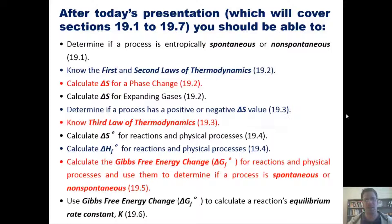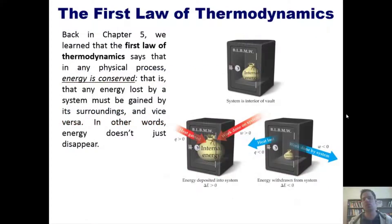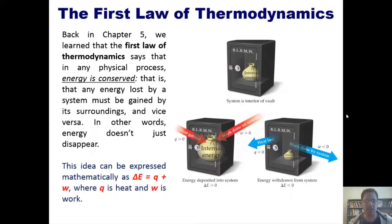That's the lineup, let's get started beginning with the first law of thermodynamics. Back in Chapter 5, to which I'll link here, we learned that the first law of thermodynamics says that in any physical process, energy is conserved. That is, that any energy lost by a system must be gained by its surroundings and vice versa. In other words, energy doesn't just simply disappear. This idea can be expressed mathematically as delta E equals q plus w, where q is heat and w is work.